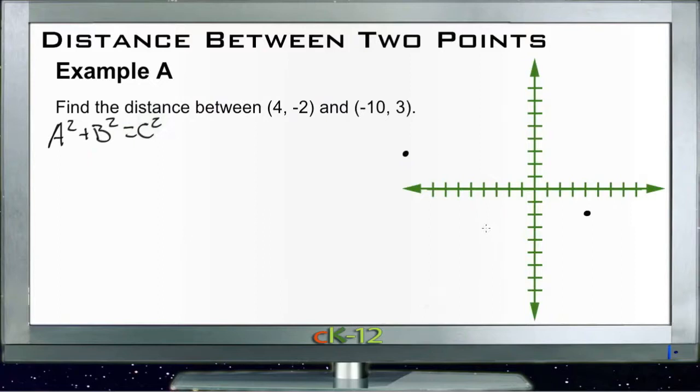Remember that a is going to represent our x distance and b is going to represent our y distance, and then c can represent the straight line distance or what we call the hypotenuse of the triangle.